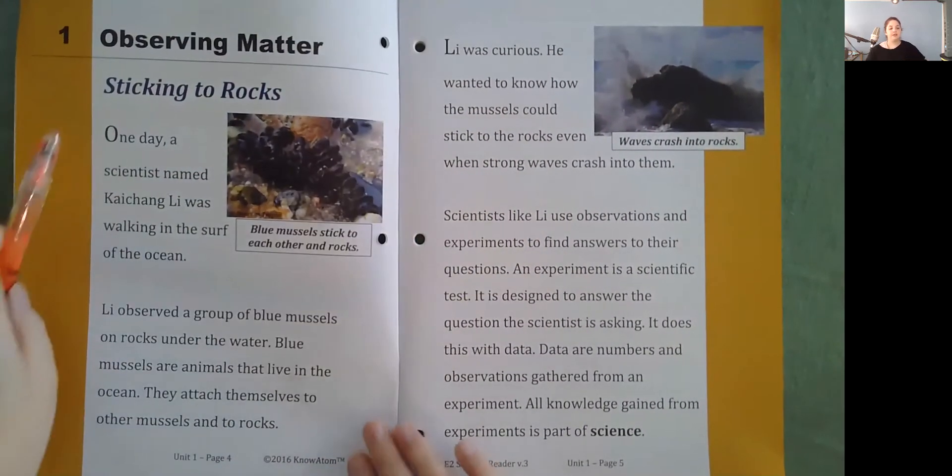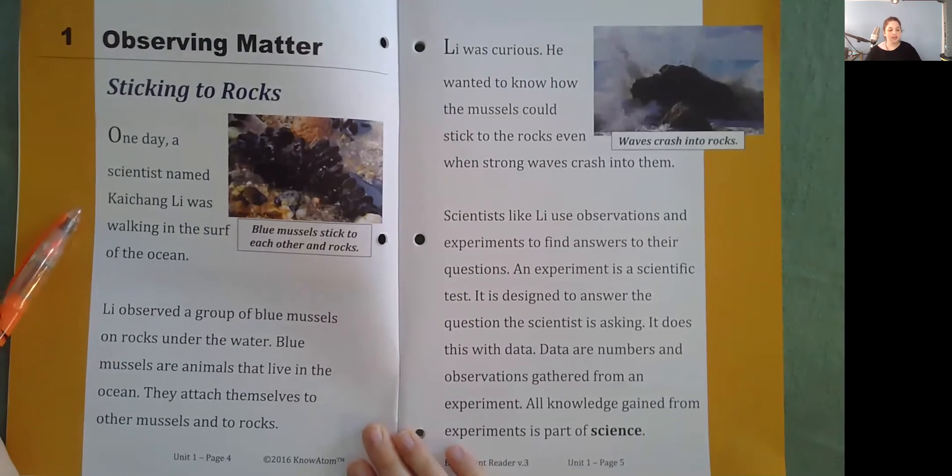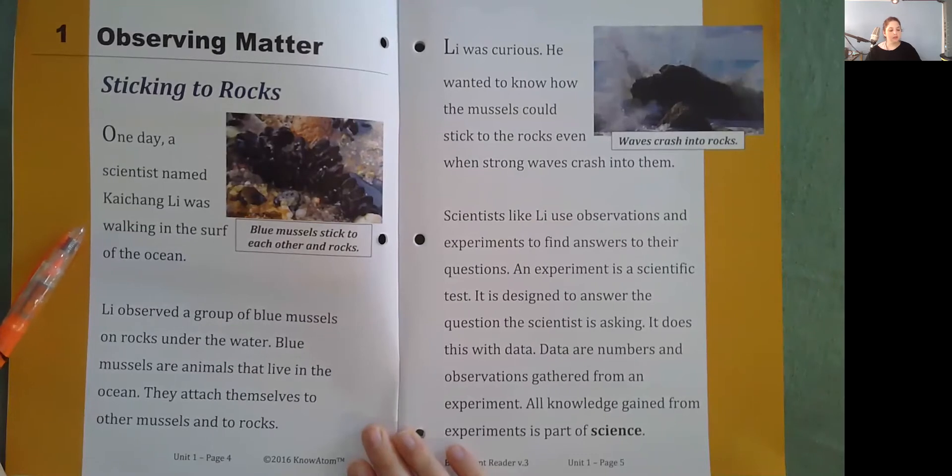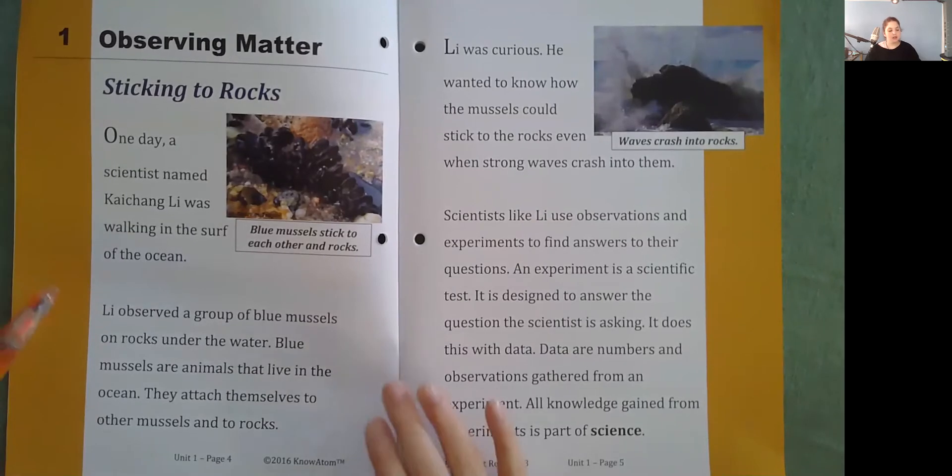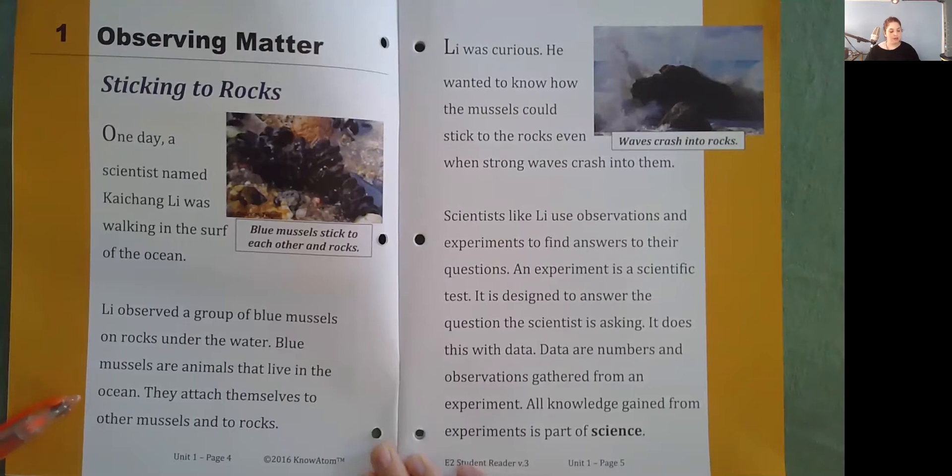Observing Matter. Sticking to Rocks. One day, a scientist named Kai Cheng Li was walking in the surf of the ocean. Li observed a group of blue mussels on rocks under the water. Blue mussels are animals that live in the ocean. They attach themselves to other mussels and to rocks.